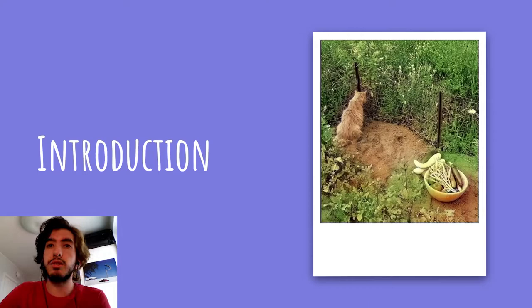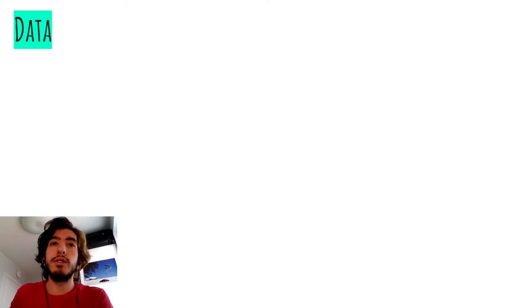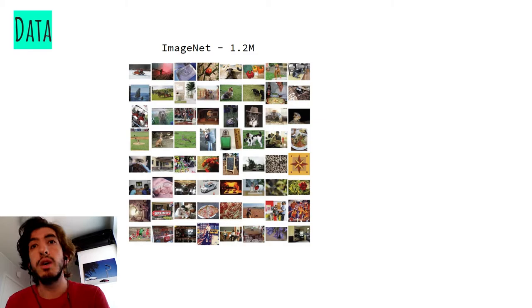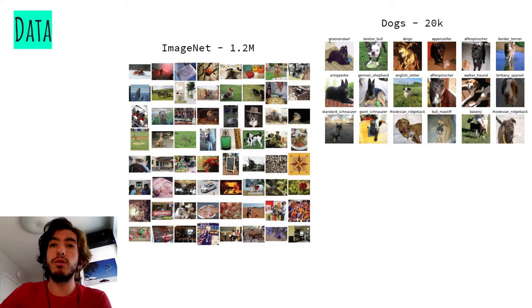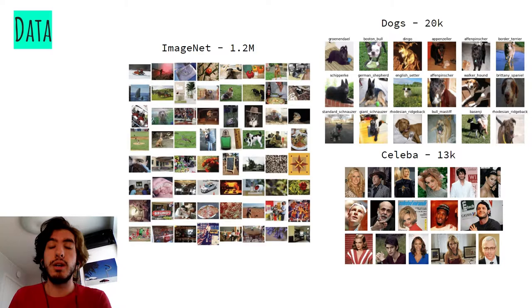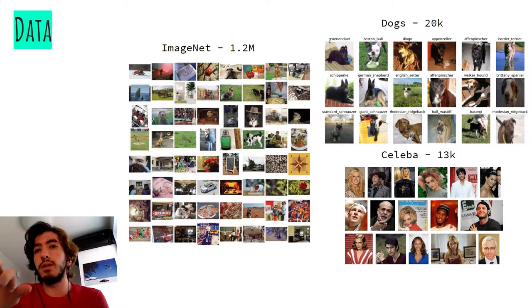Following the same approach as the paper, we use the ImageNet dataset, which contains more than 1.2 million images. We are also using a dogs dataset with over 20,000 images and the Celebrity dataset. Both the dogs and Celebrity datasets were made more specific so we can get better predictions on faces and animals.